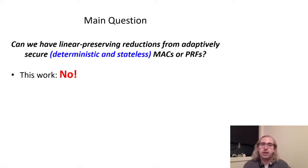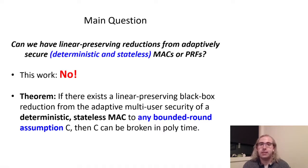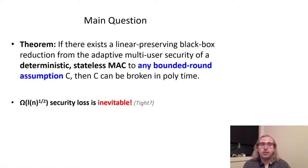In this work, we provide a strong negative answer to this question with our main result: a lower bound that rules out any linear-preserving black box reduction from adaptive multi-user security of a deterministic and stateless MAC to any bounded round assumption. Specifically, we show that any assumption for which there does exist such a reduction is inherently insecure, and demonstrate how to break it with a meta-reduction that uses the original reduction as a black box. Moreover, this approach will lower bound the concrete security loss of any such reduction by omega of square root of L. This will rule out linear-preserving reductions, since L can be arbitrarily large, whereas a linear-preserving reduction requires the security loss to be bounded above by an a priori fixed polynomial.